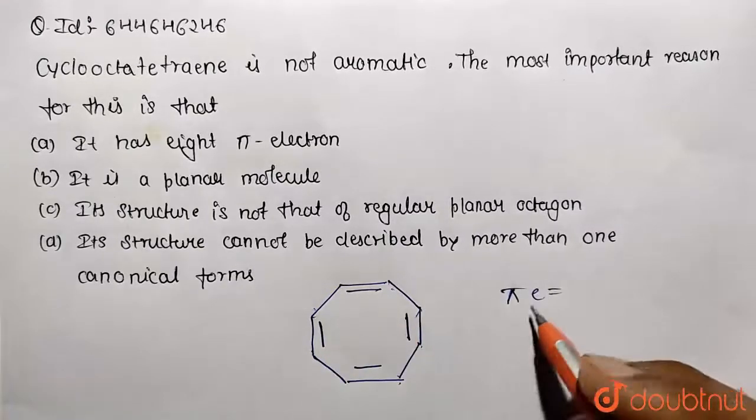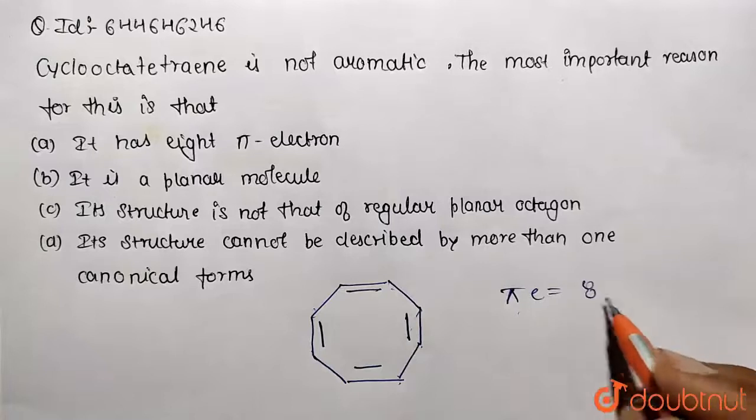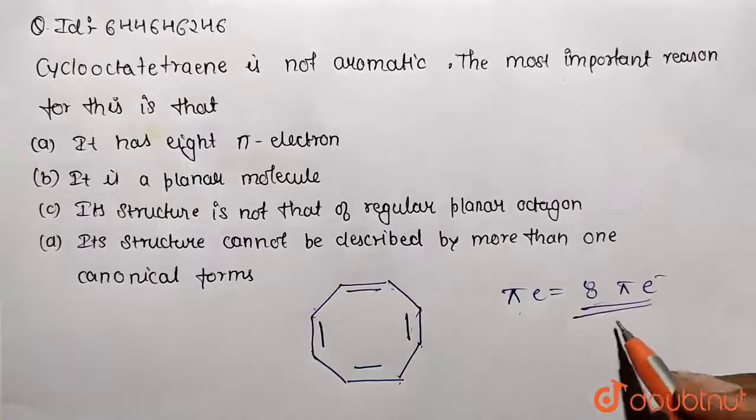Now we need to count the number of pi electrons that are being present: 1, 2, 3, 4. So pi electrons is how many? Multiply by 2, so 4 times 2 equals 8. This is an 8 pi electron system.